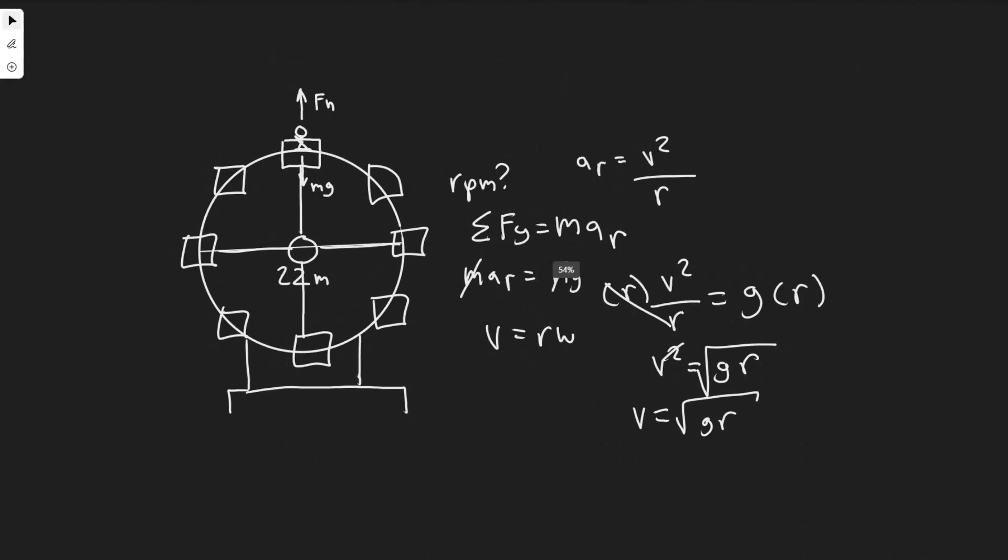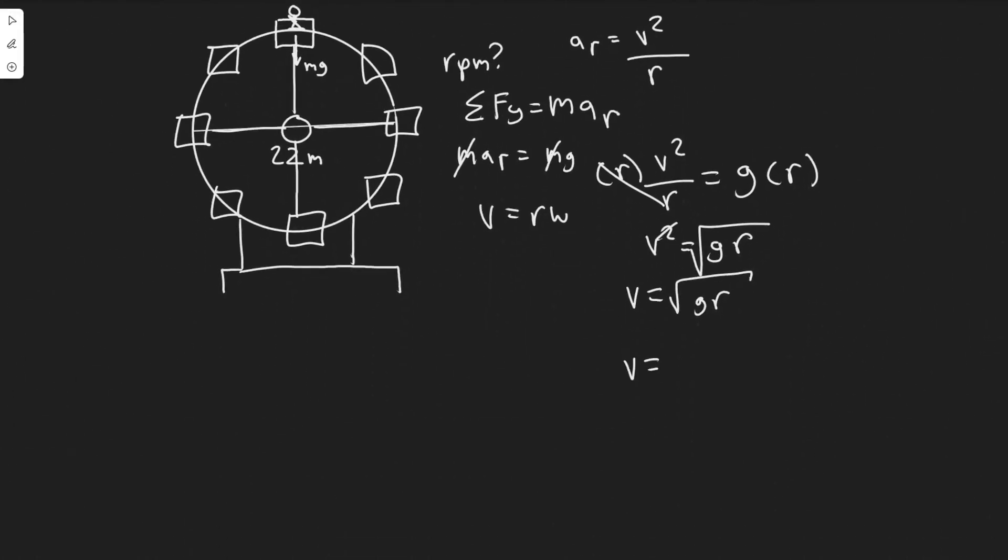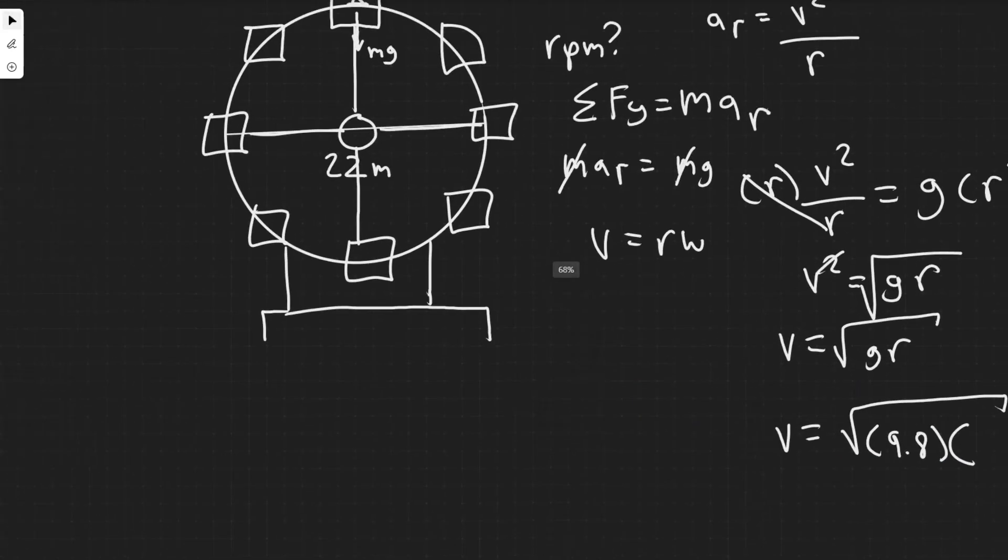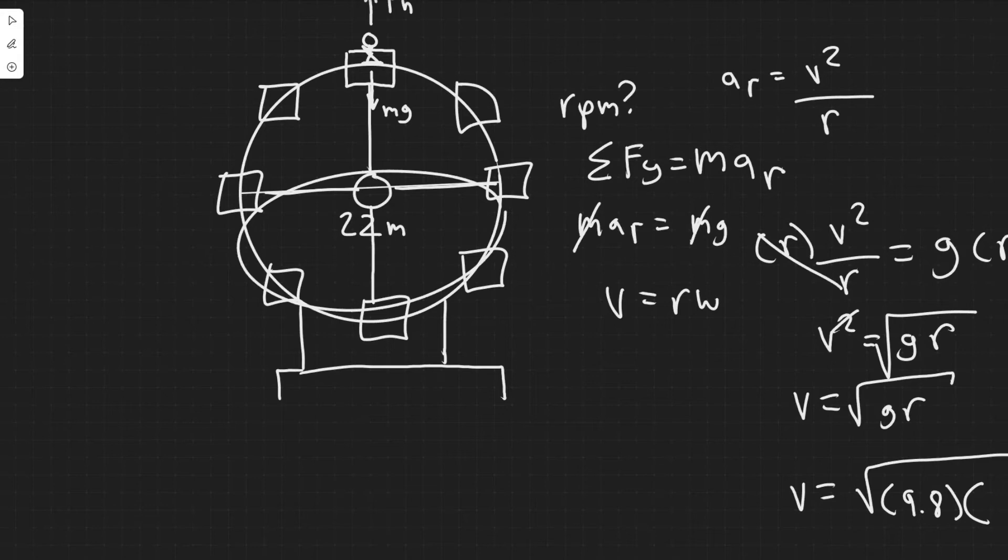And now all we got to do is really just plug in. So v equals the square root, g you should just know is the acceleration due to gravity, 9.8, multiplying that by the radius. So we know the diameter of the Ferris wheel is 22 meters. So the radius is just half of that value. So it would be 11 meters.